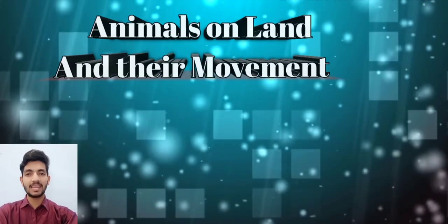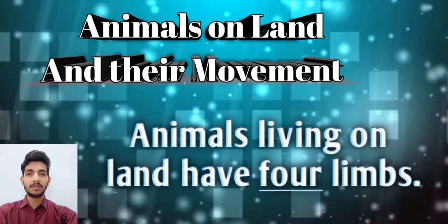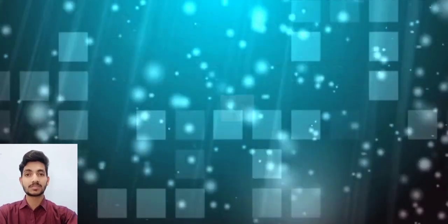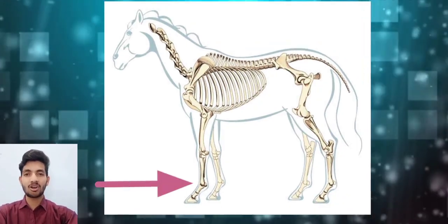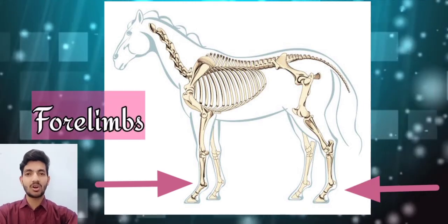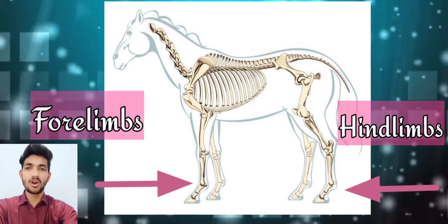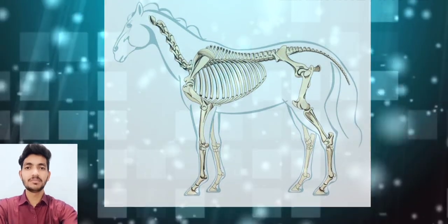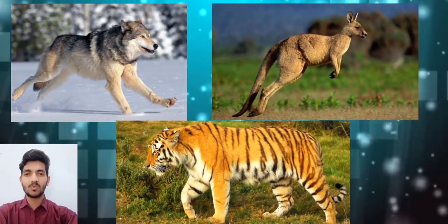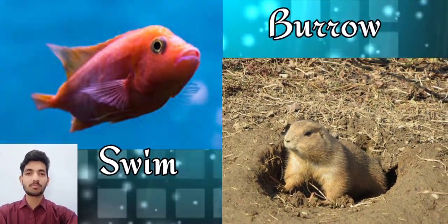Let's see animals on land and their movement. Animals living on land have 4 limbs. The two in front are called forelimbs and the two at the back are called hindlimbs. Some animals use all the forelimbs to run, hop, or walk, while some use their limbs to swim or burrow.